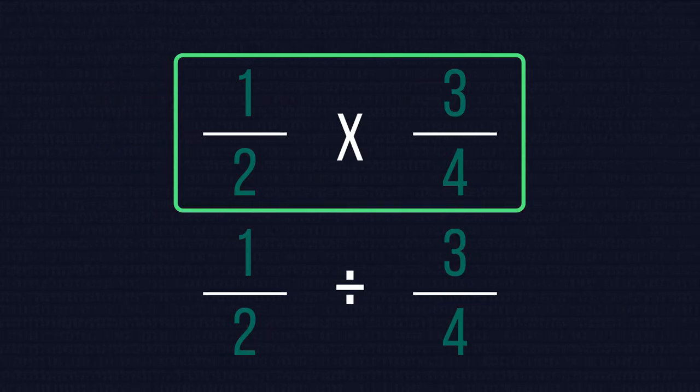To understand why we multiply fractions together in the way we do, we first need to understand multiplying a fraction by an integer.